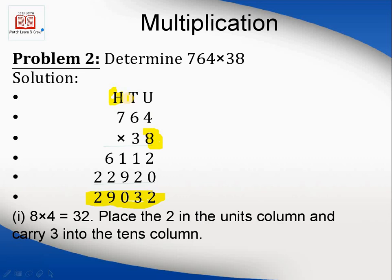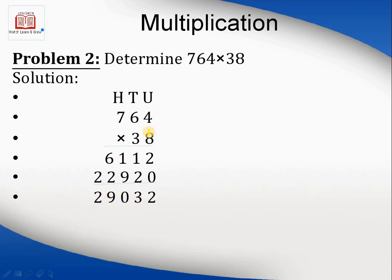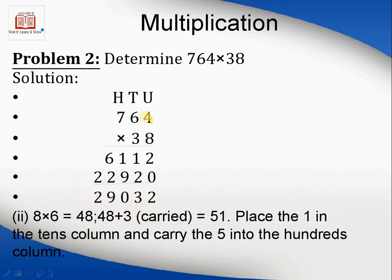8 times 6 is 48, plus 3 that was carried is 51. So 1, the least significant bit, is placed here, and the 5 is the carry.